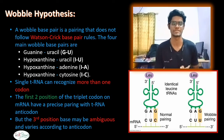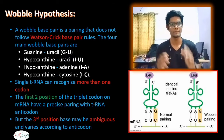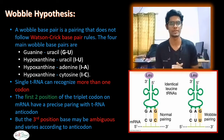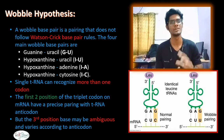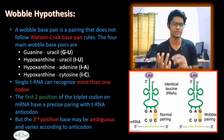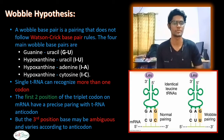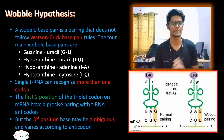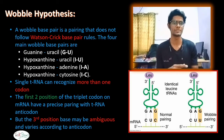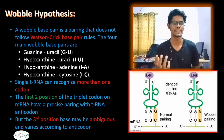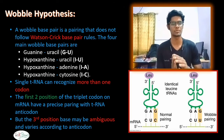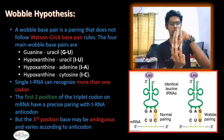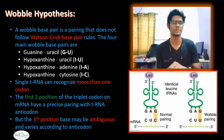Now there is the wobble hypothesis. Normally in Watson-Crick base pairing, G pairs with C and A pairs with U. However, due to wobble, a single tRNA can recognize more than one codon. The tRNA anti-codon pairs precisely at the 1st and 2nd positions, but at the 3rd position there can be variation — for example, inosine (hypoxanthine) can pair with uracil, adenine, or cytosine.